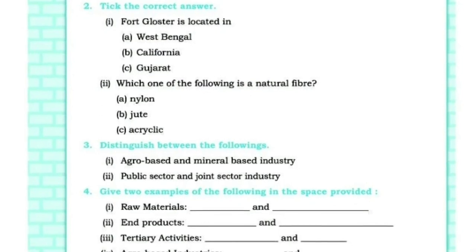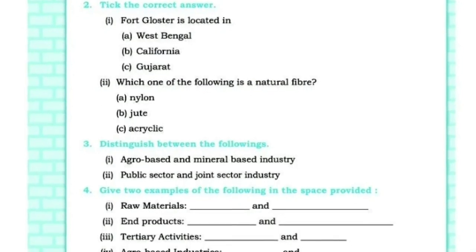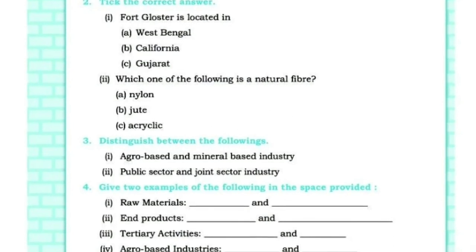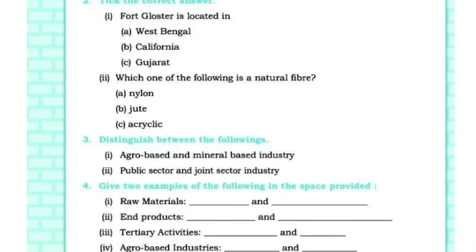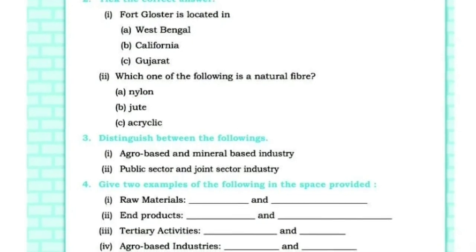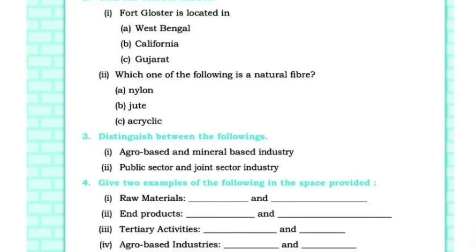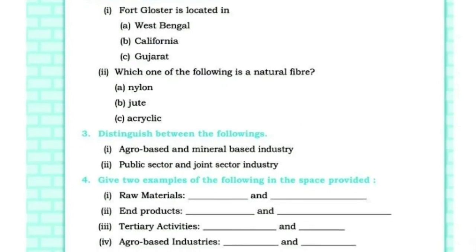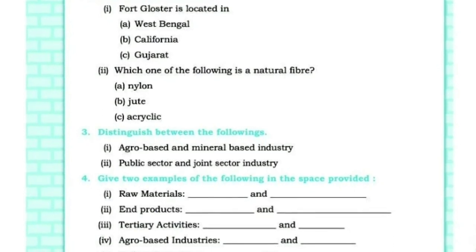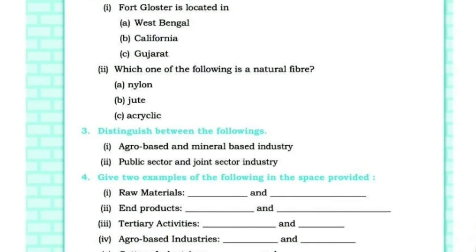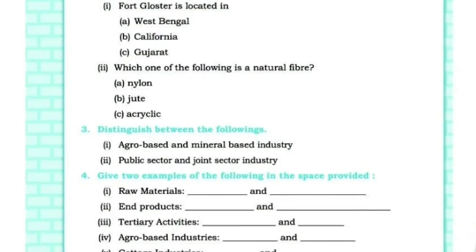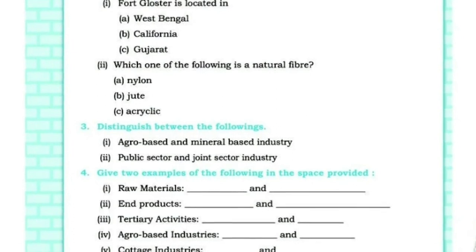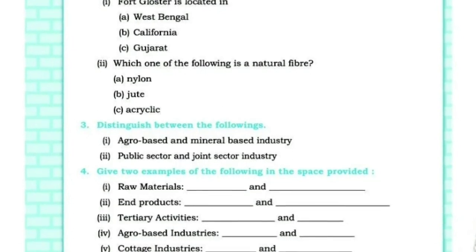Industrial system example: raw materials go in as inputs, and through the process, we get outputs or end products. For example, raw material goes in, and the final product — such as a shirt or safety pin — comes out.